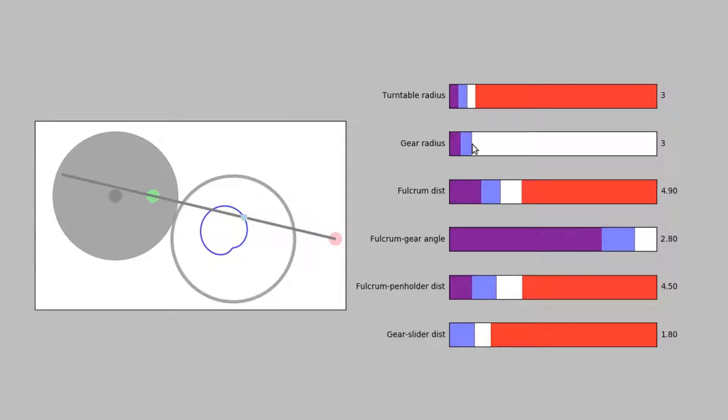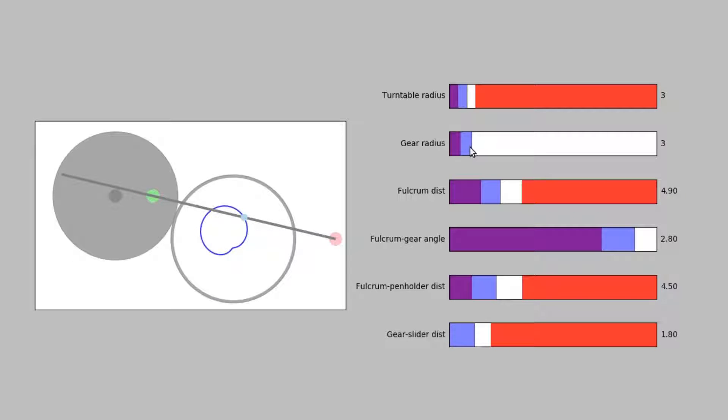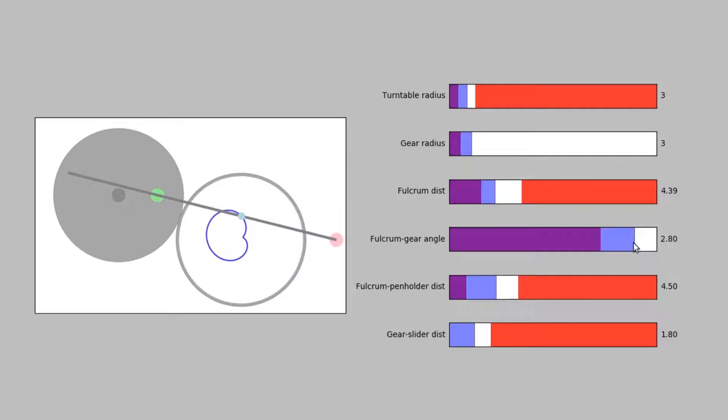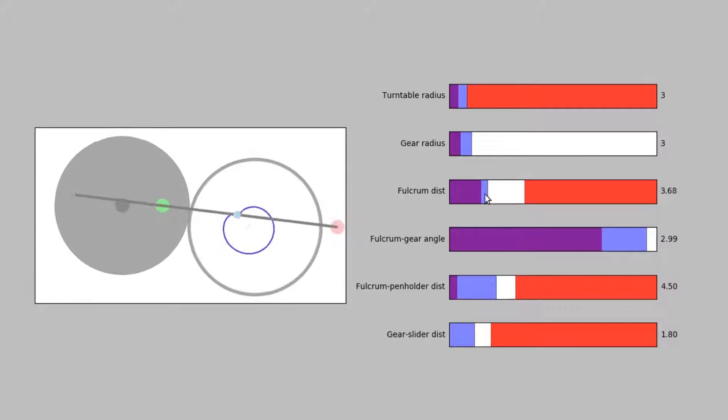the user is trying to produce a heart-like shape. She controls the mechanism with sliders that are restricted to feasible values. This interface quickly proves to be frustrating to use, as the effect of the parameters on the drawing is not easy to understand.